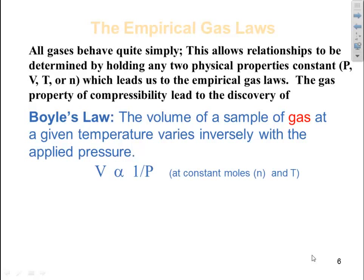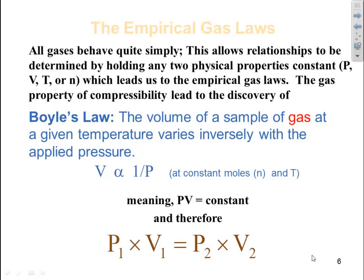This means that volume is proportional to one over pressure at constant number of moles and temperature, meaning that pressure times volume equals some constant. Therefore, the formal Boyle's Law states that P1 times V1 equals P2 times V2. We must realize this is at constant temperature and number of moles of gas.